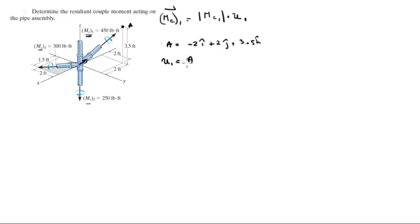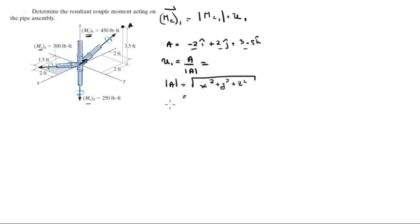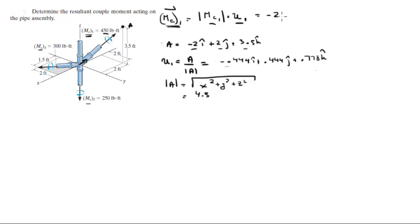Unit vector 1 equals point A divided by the magnitude of A, since A is the vector from the origin to that point. The magnitude of A equals the square root of x² + y² + z², which gives 4.5. Dividing the components by 4.5 gives the unit vector: negative 0.444 i + 0.444 j + 0.778 k. Multiplying by 450 gives the Cartesian vector form: negative 200 i + 200 j + 350 k.